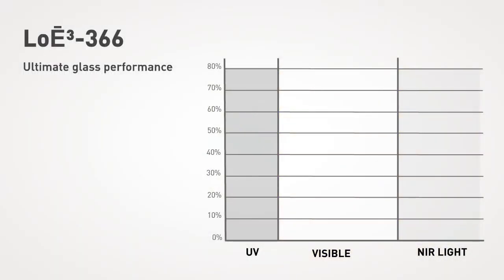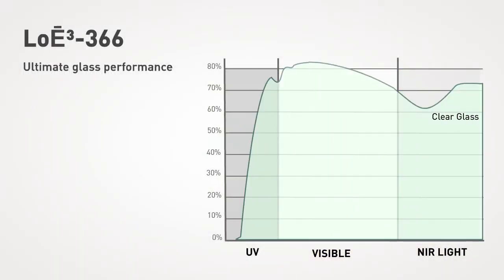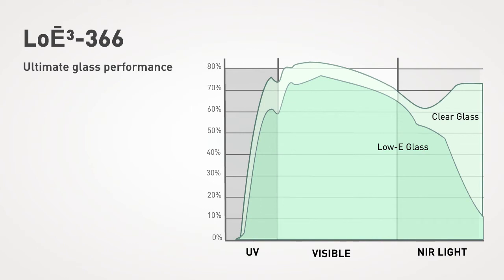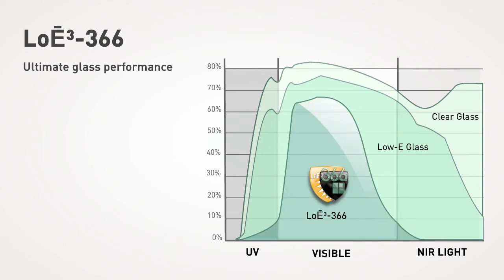What does this all mean? Clear glass transmits the most visible light, but also all the heat and fade-inducing rays. Ordinary low-E only makes a small improvement over clear glass. But low E-cubed 366 restricts unwanted UV and near-infrared while providing an attractive neutral appearance.